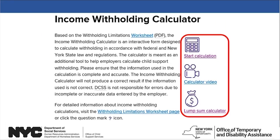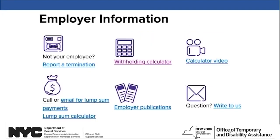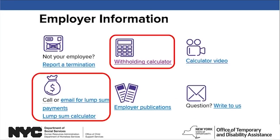If you need help using the calculator, there is a video that will walk you through the steps — just click on Calculator Video or the picture of the video camera. To use the Lump Sum Calculator to determine the amount to withhold from a lump sum payment such as a bonus or commission, click on Lump Sum Calculator or the picture of the money bag. You can also access both calculators from the Employer page of the Child Support website.